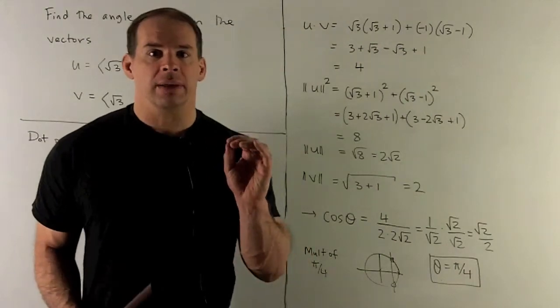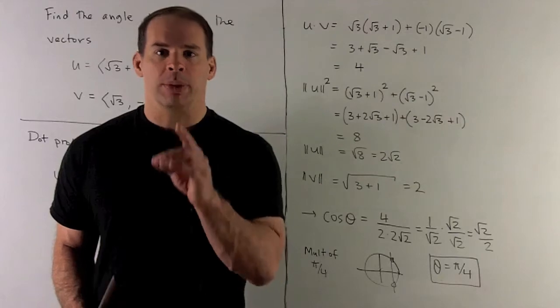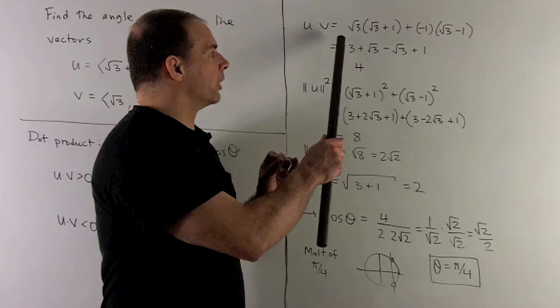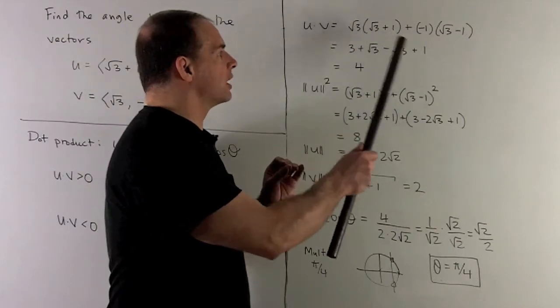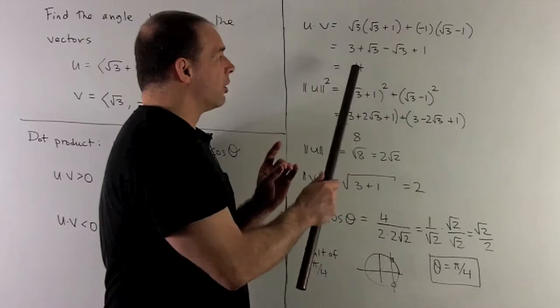First, u·v. We take our two vectors, multiply coordinate-wise and then sum. Here's x coordinates, y coordinates. We sum and I wind up getting 4.